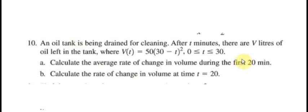Here is the question. We have the function V(t) equals 50 multiplied by (30 minus t) squared, between 0 and 30. The unit here is liters.